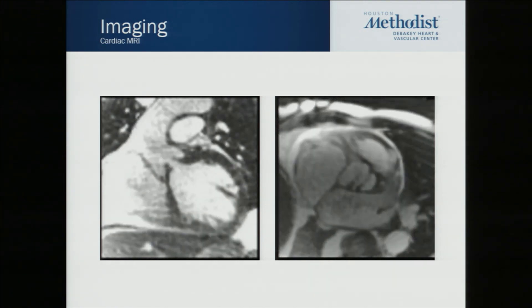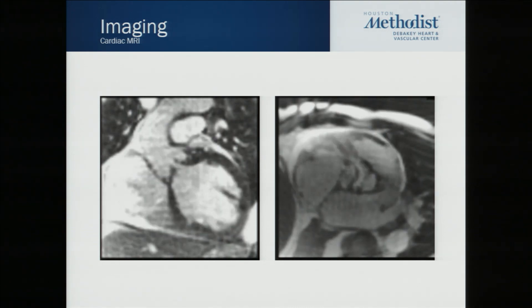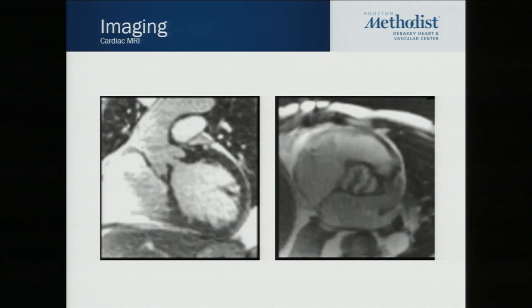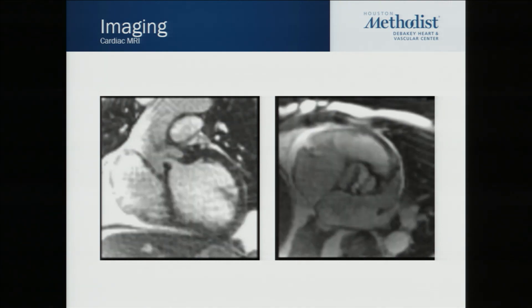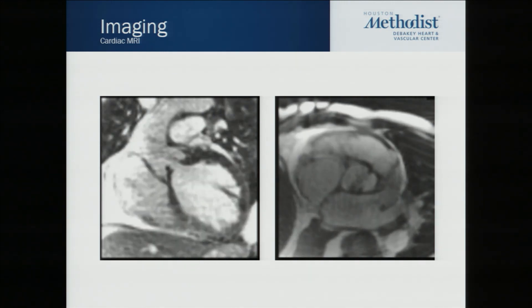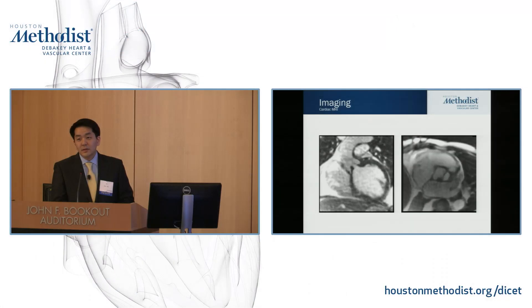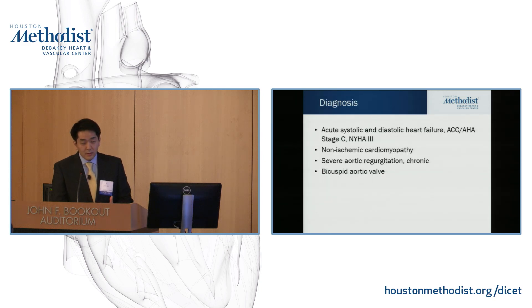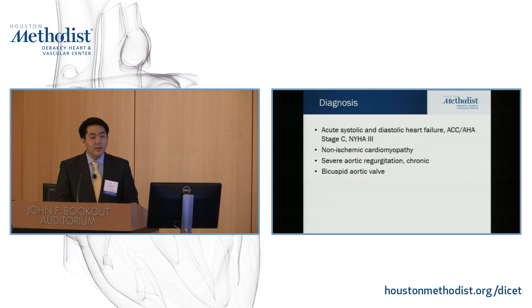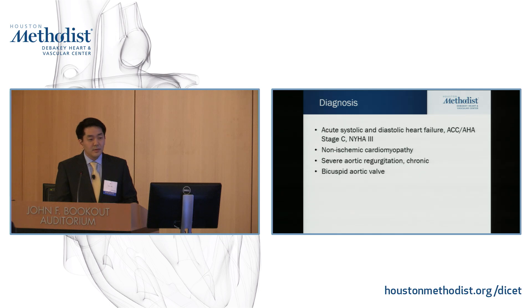Going back to the cardiac MRI, this is an LVOT three-chamber view showing color flow with a regurgitant lesion. On short axis, it shows not only aortic insufficiency but that the patient also has a bicuspid aortic valve. Using all those tools—physical examination, laboratory results, X-rays, EKG, echocardiogram, ischemia evaluation, and cardiac MRI—we arrived at the diagnosis: acute systolic and diastolic heart failure, Stage C with NYHA functional Class III symptoms, non-ischemic cardiomyopathy with severe aortic regurgitation, likely chronic, associated with a bicuspid aortic valve.